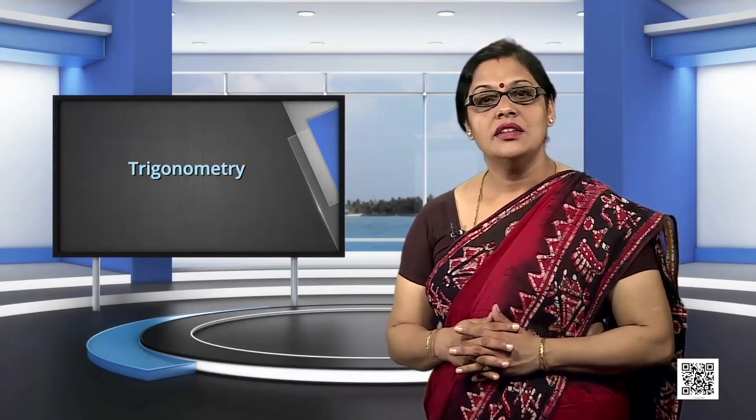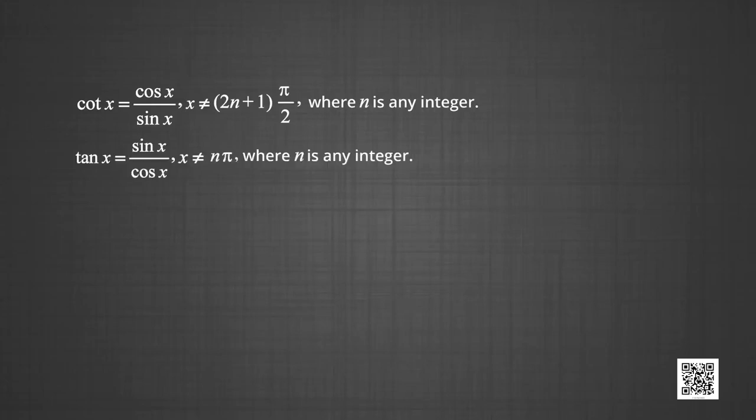Now let us see how we get the values of cot and tan. cot x = cos x / sin x, when x is not equal to nπ, where n is any integer. And tan x = sin x / cos x, when x is not equal to (2n + 1)π/2, where n is an integer.